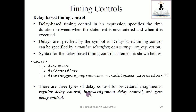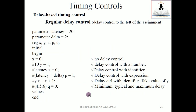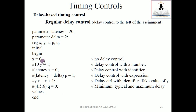The first type we are studying is regular delay control. In short, it is a delay control written to the left of the assignment. Whenever you write a delay specification starting with hash (#) to the left of the assignment, we call it regular delay control.